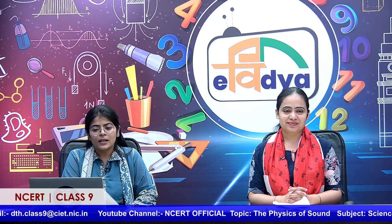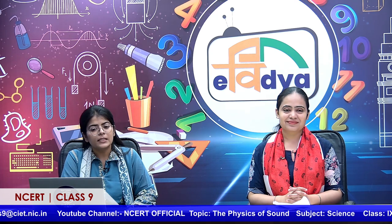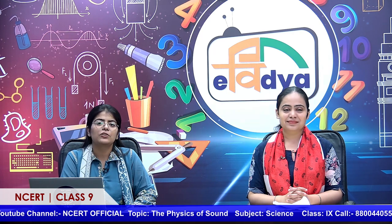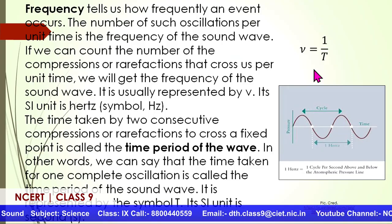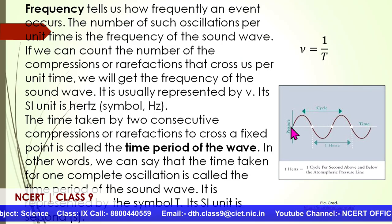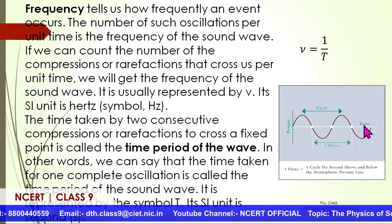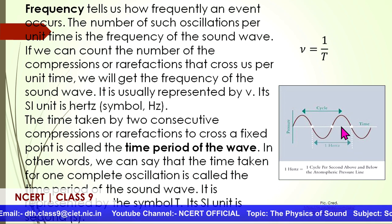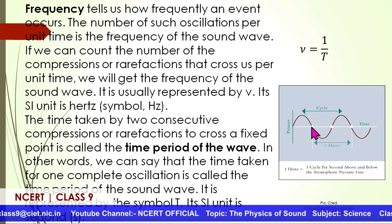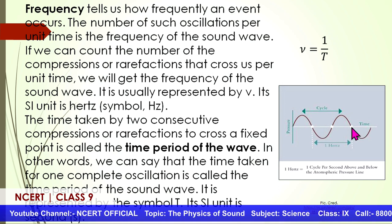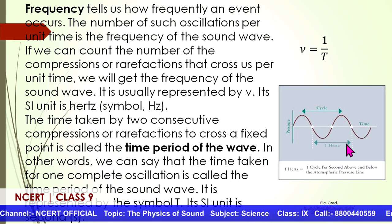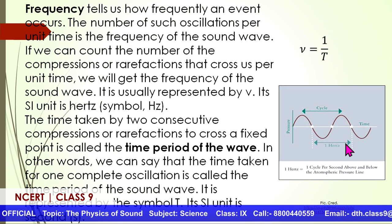What is time period? It is the time taken by two consecutive compressions or rarefactions to cross a fixed point in a time frame. The previous parameter — wavelength — was in the space frame; time period is in the time frame. One upon time period is frequency. On the x-axis of the diagram here, the scale represents time, not distance. The separation between one point and the next gives one Hertz of frequency, or one time period — you can discuss it in terms of either.